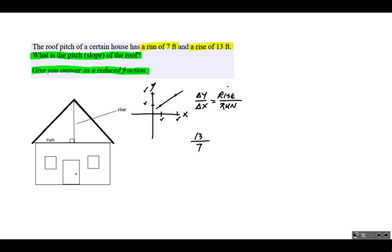If we look at this, we have two prime numbers. 13 and 7 are both prime numbers, so we can't reduce this fraction any further. We are finished solving this problem. The slope or pitch of this roof equals 13 over 7.